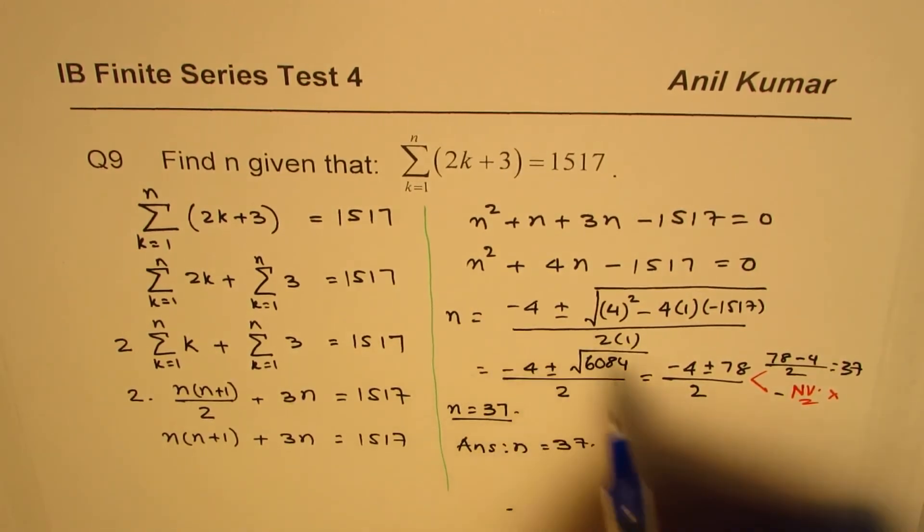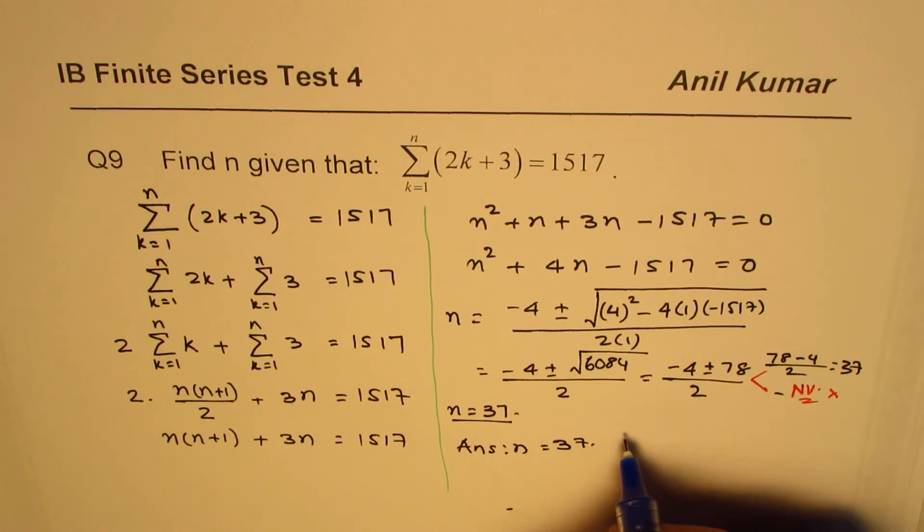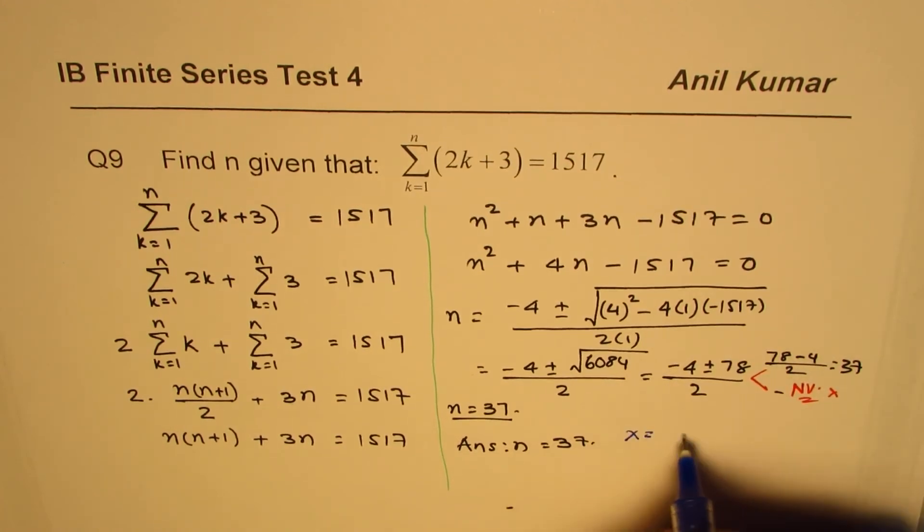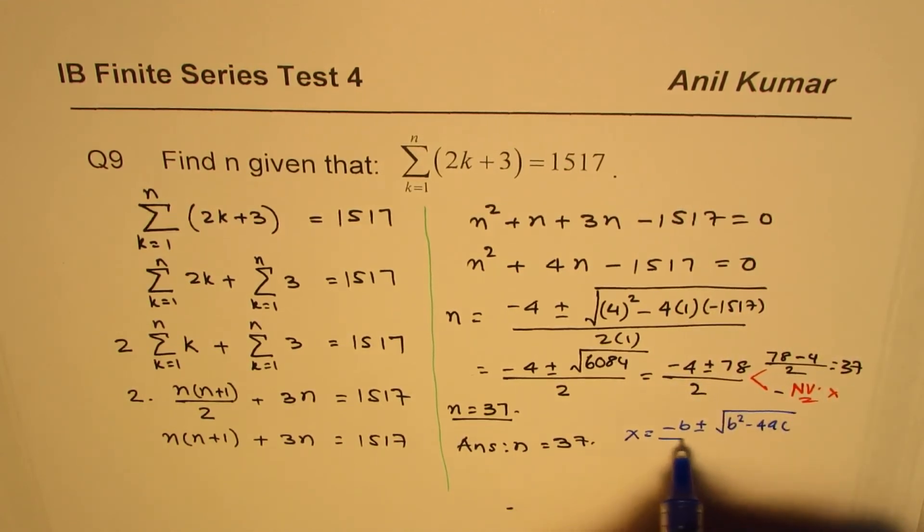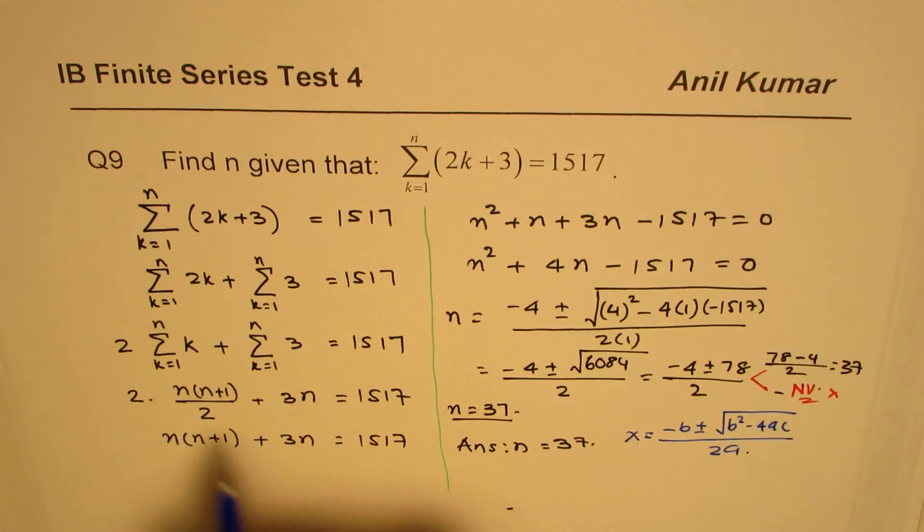One, the quadratic equation formula, which is, let me write here, x equals to minus b plus minus square root of b square minus 4ac divided by 2a.